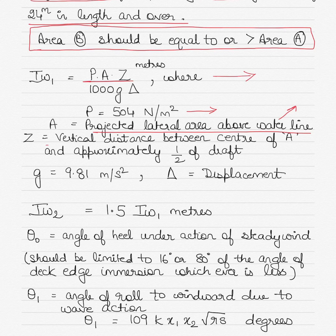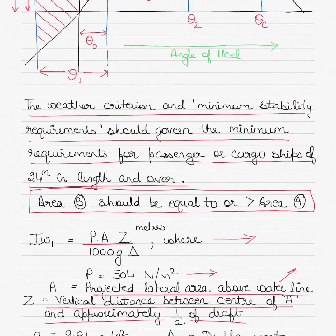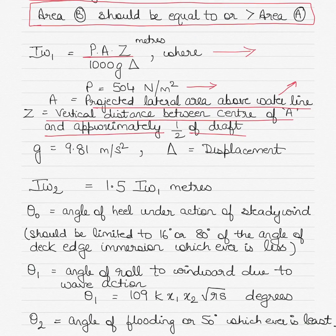Z is the vertical distance between the center of A and approximately half of the draft. G is of course equal to acceleration which is 9.81 meters per second square, and the triangle shape stands for the vessel's displacement. IW2 is calculated by multiplying IW1 by the value 1.5. Both these values are in meters and plotted on the GZ curve.